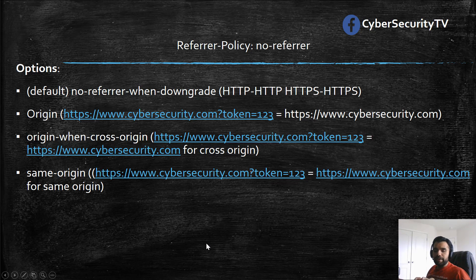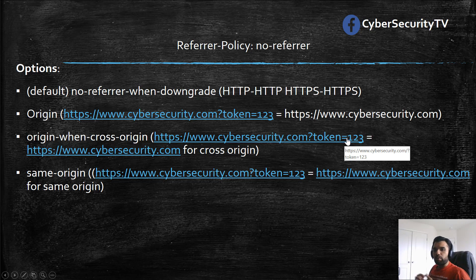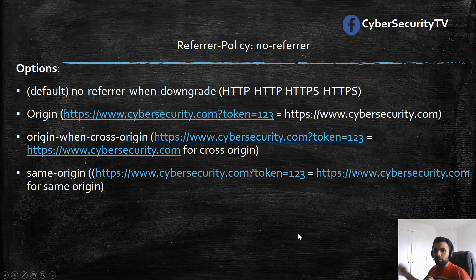Another option is same-origin. On same-origin, you want to restrict further. In the previous example, for same-origin we were sending everything, assuming it's a trusted website. However, if you do not trust — because there might be multiple applications handled by multiple teams on the same origin in an enterprise application — you can use same-origin, and here instead of cybersecuretv.com?token=123, it's only going to share the origin of the request even for same-origin requests, and of course it's not going to share anything for cross-origin.